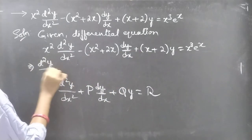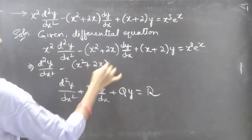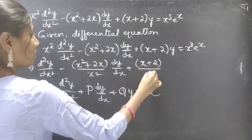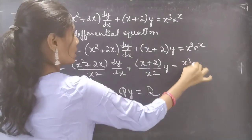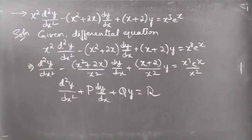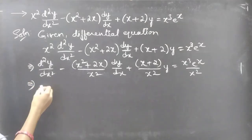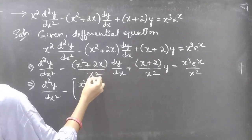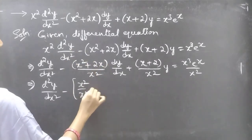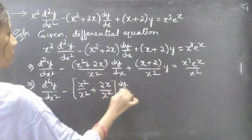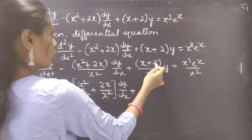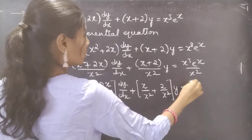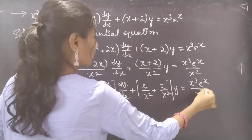Dividing both sides by x squared, we get d²y/dx² minus (x squared plus 2x)/x² times dy/dx plus (x plus 2)/x² times y equals x cubed e to the power x divided by x squared. Since we have two terms in each numerator and one term in the denominator, we can split each fraction into two separate fractions.